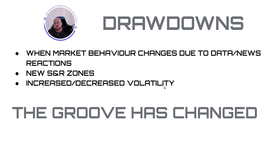For me, drawdowns occur when market behavior changes due to data or news reactions. We get new support and resistance zones — those levels change — and increased or decreased volatility and volume happen. It's almost like a reset; the groove has changed. With any trading strategy, if you're trading the same instrument, that groove will change when there's a big data reset.